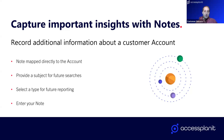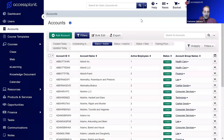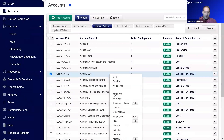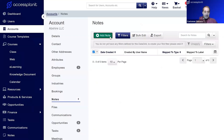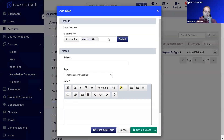The first example is recording additional information about your customers. Notes are perfect for this — there are only three bits of information to supply and only one is mandatory, and once logged that information is available for all of your team. We navigate to our accounts data grid, find the account we want, right-click, go down to the notes section and click the add button. When we click 'Add note' it's already mapped to that account automatically.